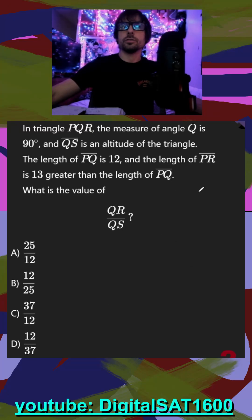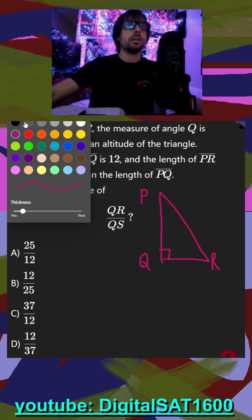In triangle PQR, the measure of Q is 90. So we can draw this off to the side here. We have PQ and R, and we have a 90. Next...